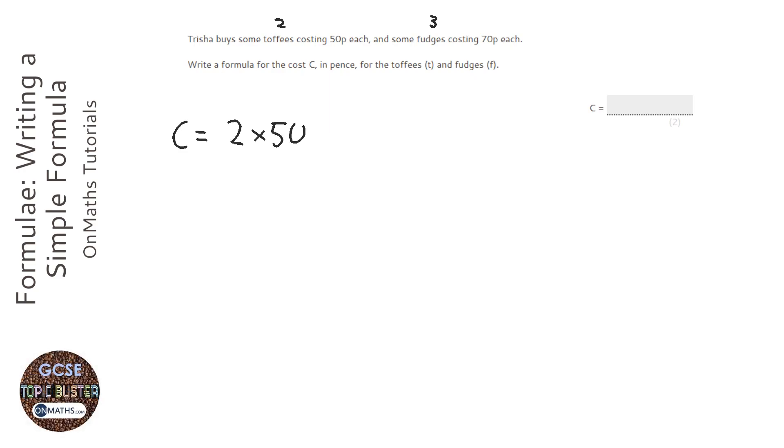The problem is that two and three I've just made up, so that's not going to be the answer to this question. What it says though is that it wants toffees to be called t and fudges, the amount of fudges, to be called f.